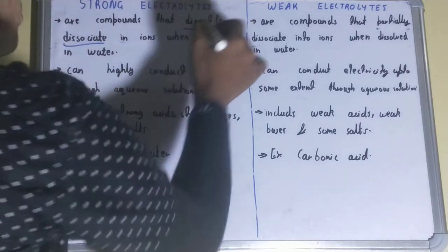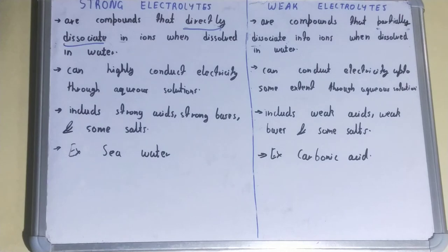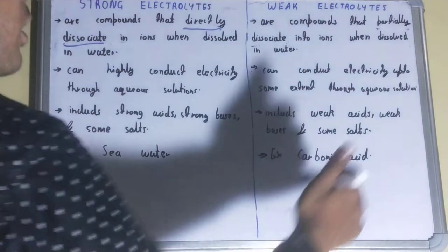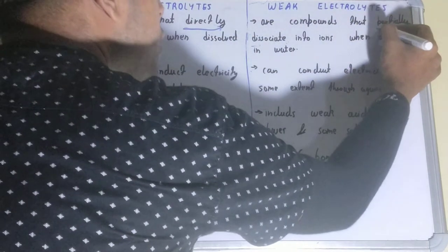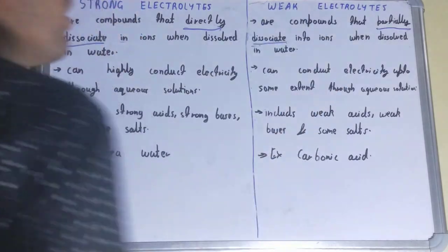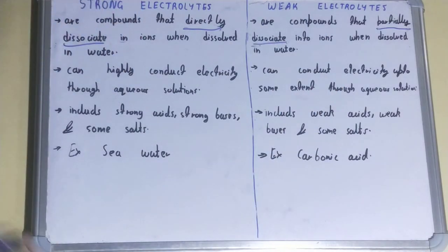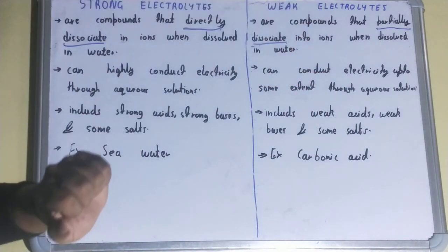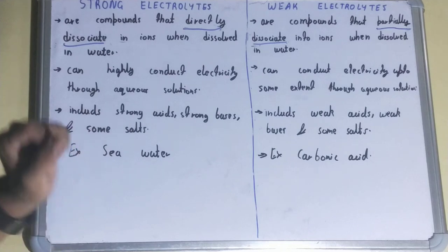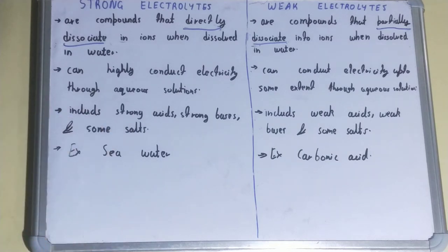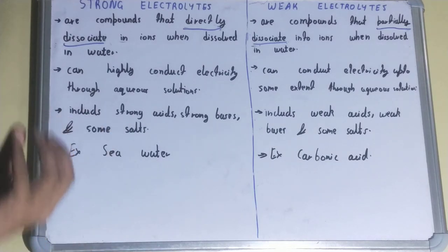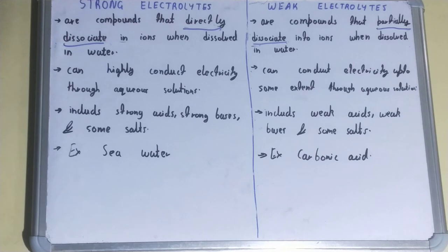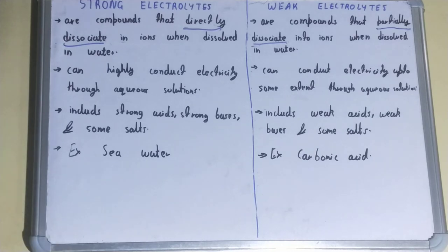That is the main property of strong electrolytes. But if we talk about the weak electrolyte, these are the compounds that partially dissociate into ions when dissolved in water. They will not release complete ions when dissolved in water.